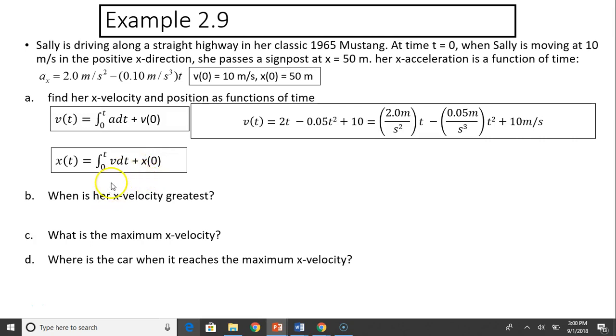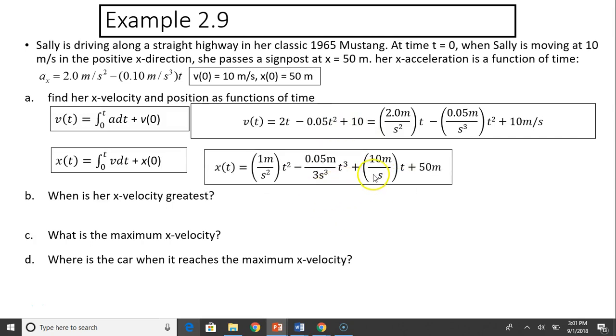To find the position function, you'll have to integrate velocity with time. So plug the velocity expression in here. So you integrate this. This integral is t², this part is 0.05/3 times t³, this becomes 10t, then the initial position is 50. So this is the result with the units.